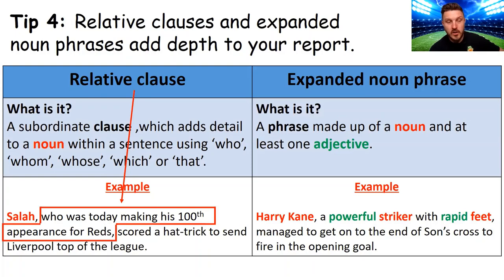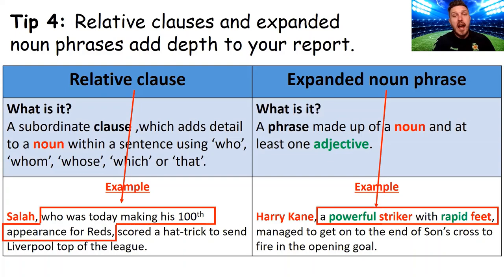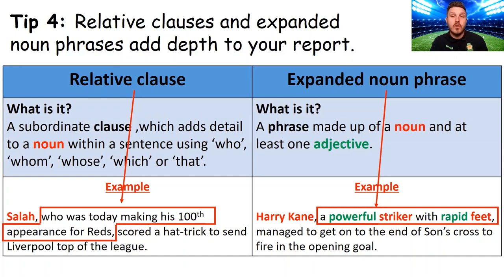For expanded noun phrases, it's a phrase which has a noun and at least one adjective to describe it. In the example, our nouns are 'Harry Kane,' 'striker,' and 'feet,' and the description reads: 'Harry Kane, a powerful striker with rapid feet, managed to get onto the end of Son's cross to fire in the opening goal.' The adjectives 'powerful' and 'rapid' describe those nouns to expand them as an expanded noun phrase. If you're not too sure, feel free to watch it again, do a little more research, or speak to your teachers — they can really add detail and excitement to your report.